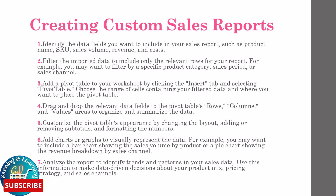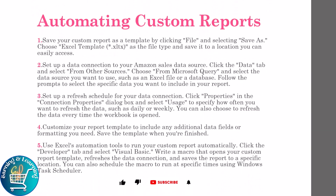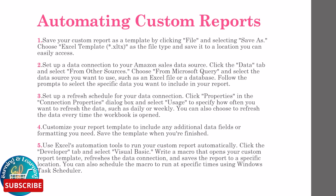Automating custom reports: save your custom report as a template by clicking File and selecting Save As. Choose Excel Template as the file type and save it to a location you can easily access. Set up a data connection to your Amazon sales data source — click the Data tab, select From Other Sources, choose From Microsoft Query, and select the data source you want to use, such as an Excel file or database. Follow the prompts to select the specific data you want to include in your report.